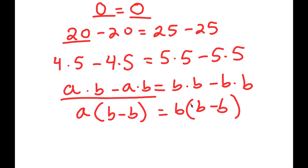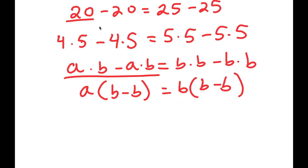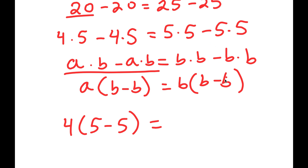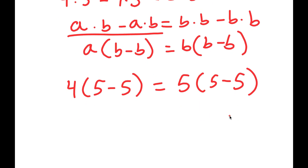So now, in the case of our specific numbers, from the left-hand side I'm going to factor out 4, giving me 4 times (5 minus 5). From the right-hand side I'm going to factor out 5, giving me 5 times (5 minus 5). So now I have 4 times (5 minus 5) is equal to 5 times (5 minus 5).